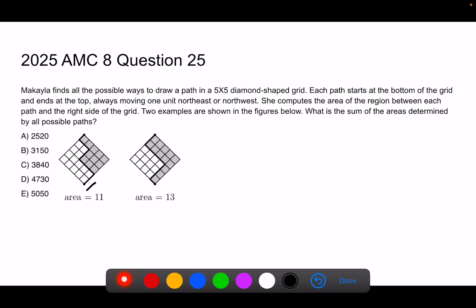You cannot go back. You compute the area of the region between each path and the right side of the grid. Two examples are shown in the figure below, just to make sure we understand this question.